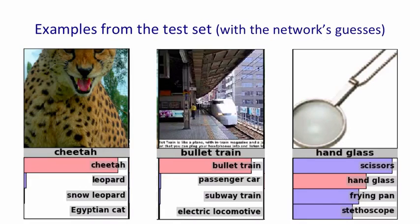The last image shows a different kind of example where there's no background clutter — the object is quite well isolated, probably a picture from a catalogue. The network doesn't get it right for its first bet, but it does get it in its top five. The network isn't confident about anything here, and it correctly realizes it doesn't really know. If you look at the other possibilities, they're all perfectly plausible — if you screw your eyes up you can see how it might think it was a frying pan or a stethoscope.